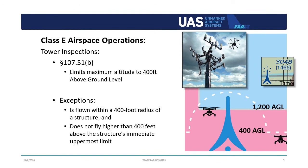The FAA Small UAS Rule, Part 107.51, allows for drone flights to fly higher than 400 feet AGL in certain situations. If you are operating within a 400-foot radius of a structure, you can fly to the structure's uppermost limit plus an additional 400 feet. This can be very beneficial for a variety of UAS missions — for example, inspecting a cell tower. Consider the example structure shown here: you could fly to a maximum altitude of 1865 feet above ground level, as long as you comply with all other parts of the small UAS rule, such as maintaining visual line of sight.